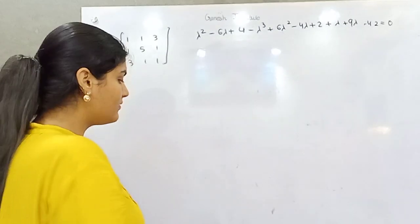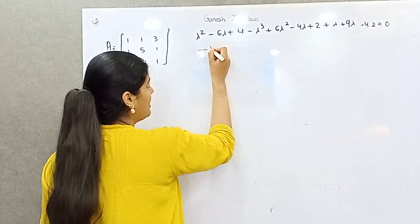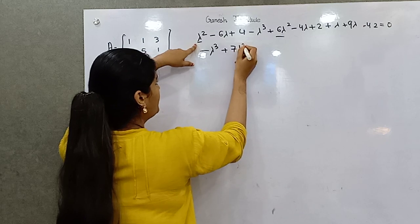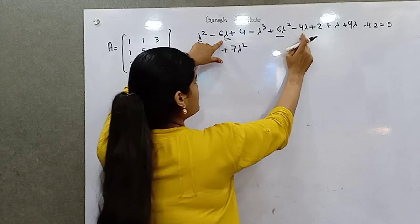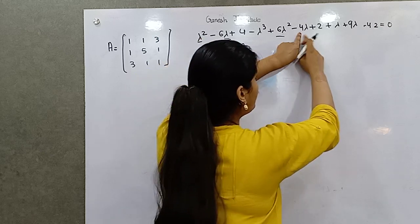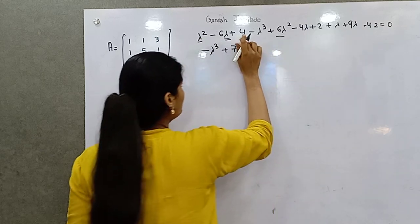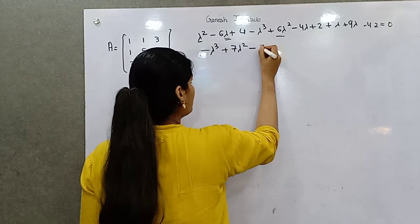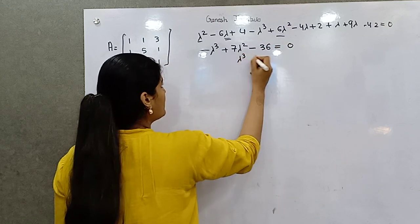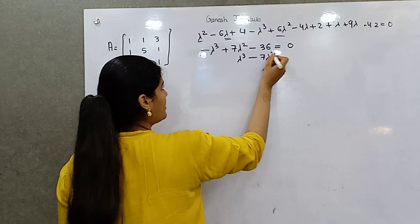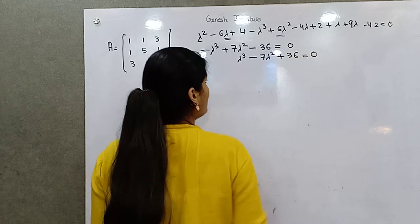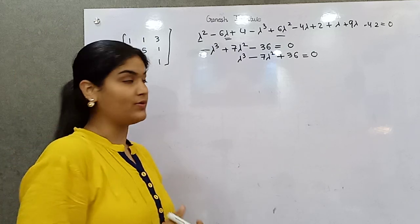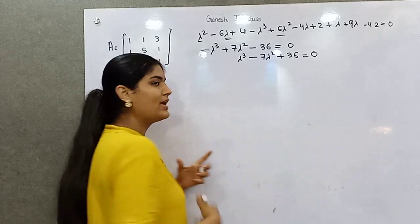This is our equation where we left off. The highest power is lambda cubed, then lambda squared times 6 and 1. We need to find the roots. To solve a cubic polynomial, use the trial method — put in a value that makes the expression zero.